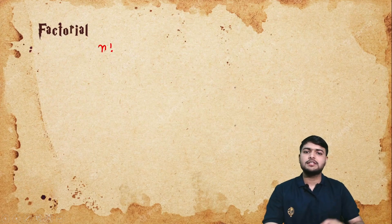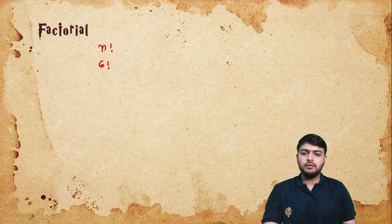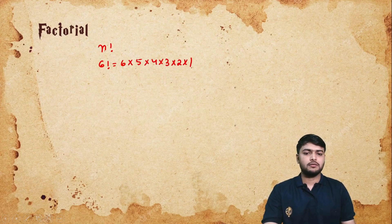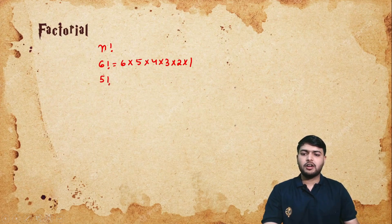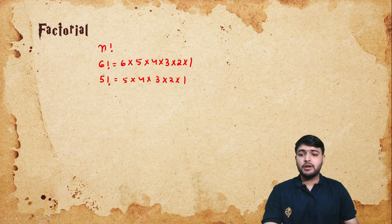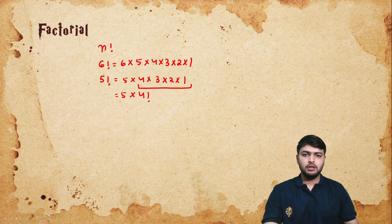The first concept we need to know is the concept of factorial. N factorial is simply the product of all the integers less than or equal to n. For instance, 6 factorial is 6 × 5 × 4 × 3 × 2 × 1. Similarly, 5 factorial is 5 × 4 × 3 × 2 × 1, which can also be written as 5 × 4 factorial.